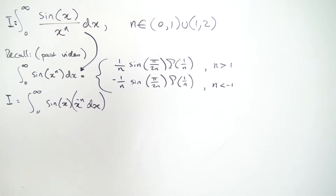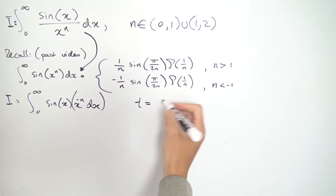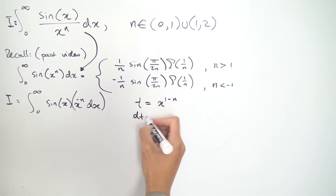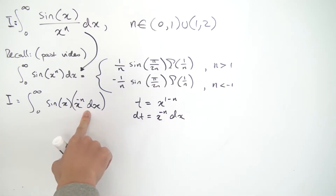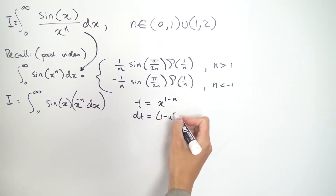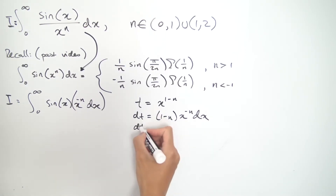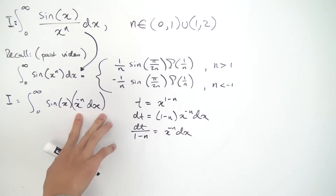We want a function whose differential equals x^(−n) dx. Let t = x^(1−n) — adding 1 to the power gives an antiderivative of x^(−n). Differentiating using the power rule: dt = (1−n) x^(−n) dx, so isolating the x^(−n) dx part gives x^(−n) dx = dt/(1−n). That takes care of that piece of the integral.